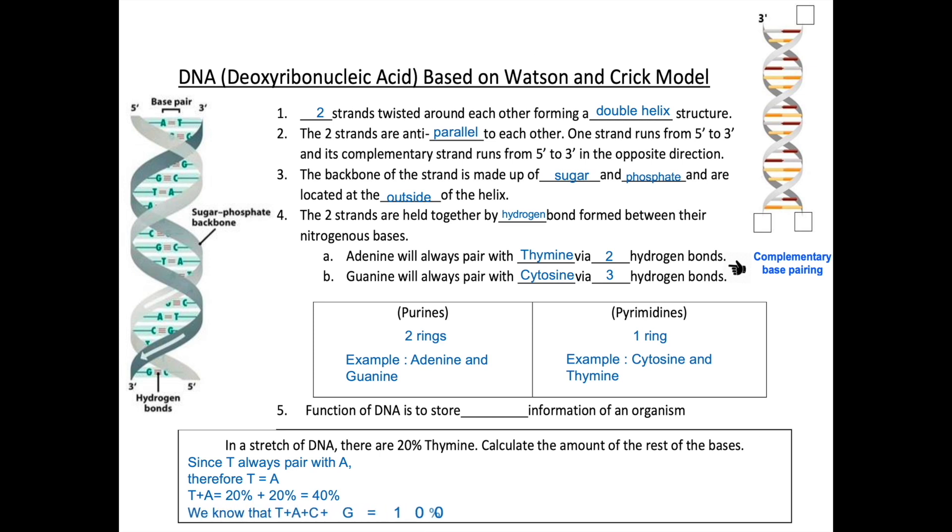We know that if we add up all the bases, T, A, C, G, we will get everything, or in other words, we will get 100%. To find out C and G, we have to deduct 100% with the amount of T and A, which is 100% minus 40%. This gives us 60%.